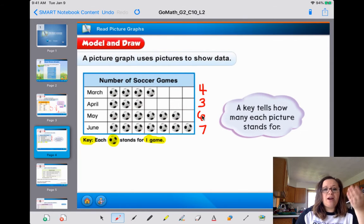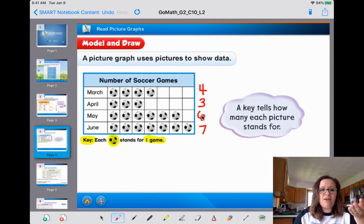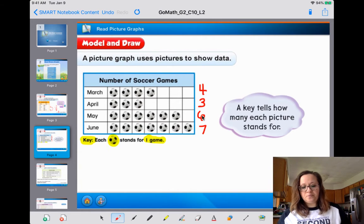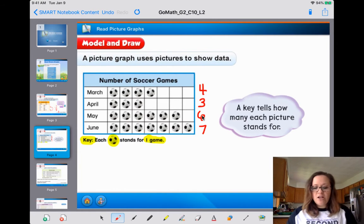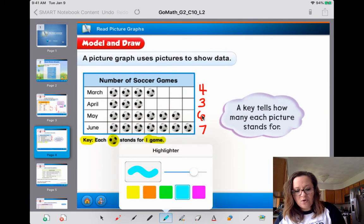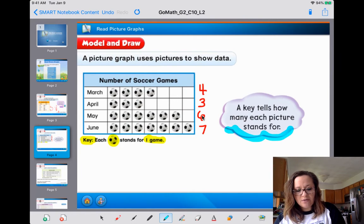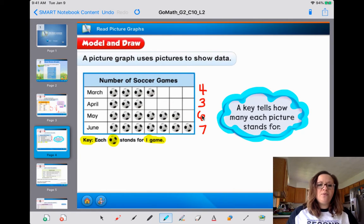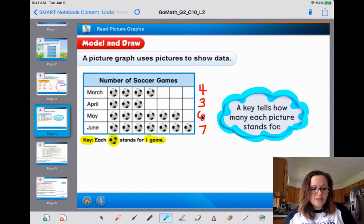And then you can just see with your eyeball either way, whether you write the numbers or not. In June, look at how many soccer games they had. They had the most soccer games. Which month had the least soccer games? Well, you can definitely tell that April only has three, right? And that's the least. A key tells what the picture in the picture graph stands for. Look at that little cloud. See, Miss Wolf's not lying on you. I'm helping you out.